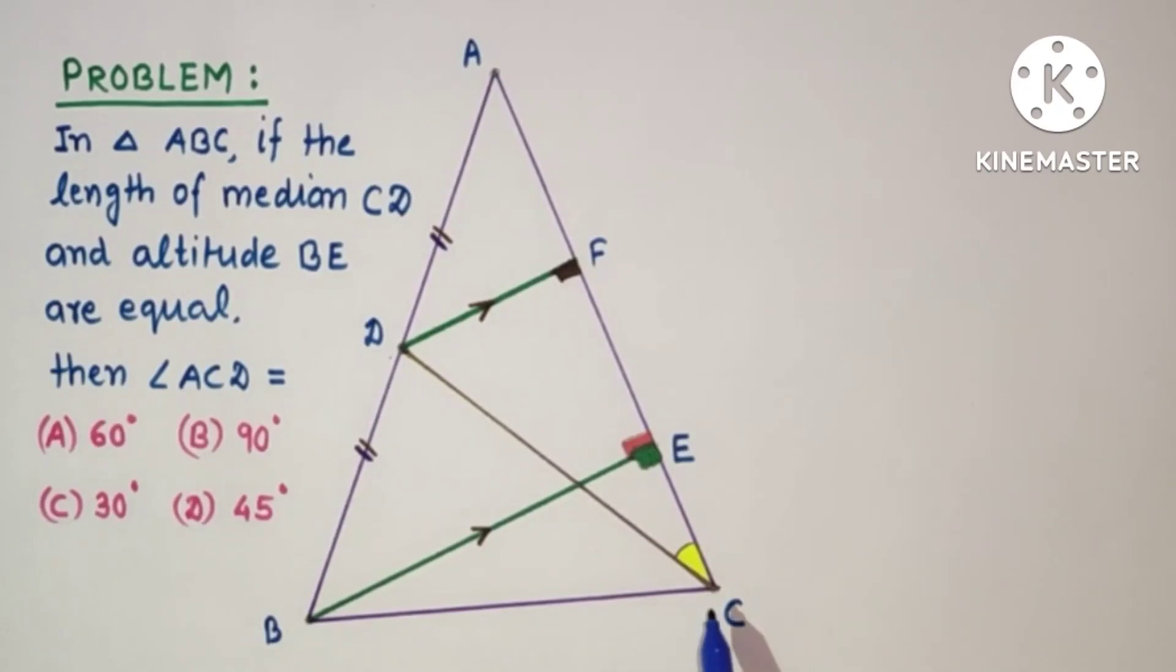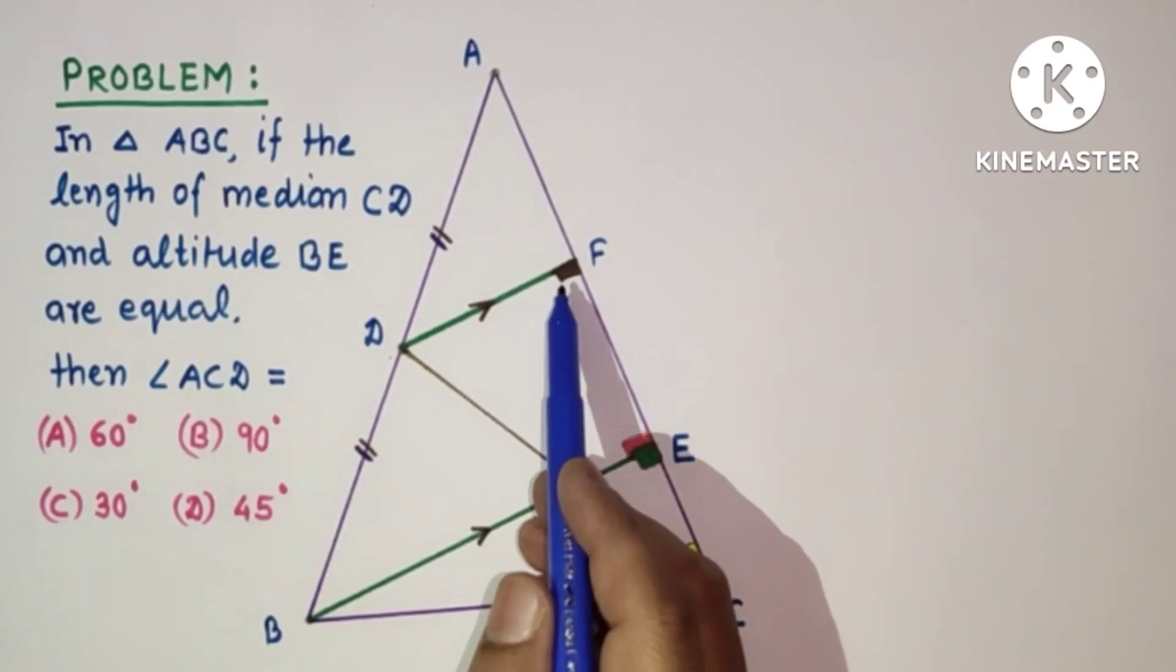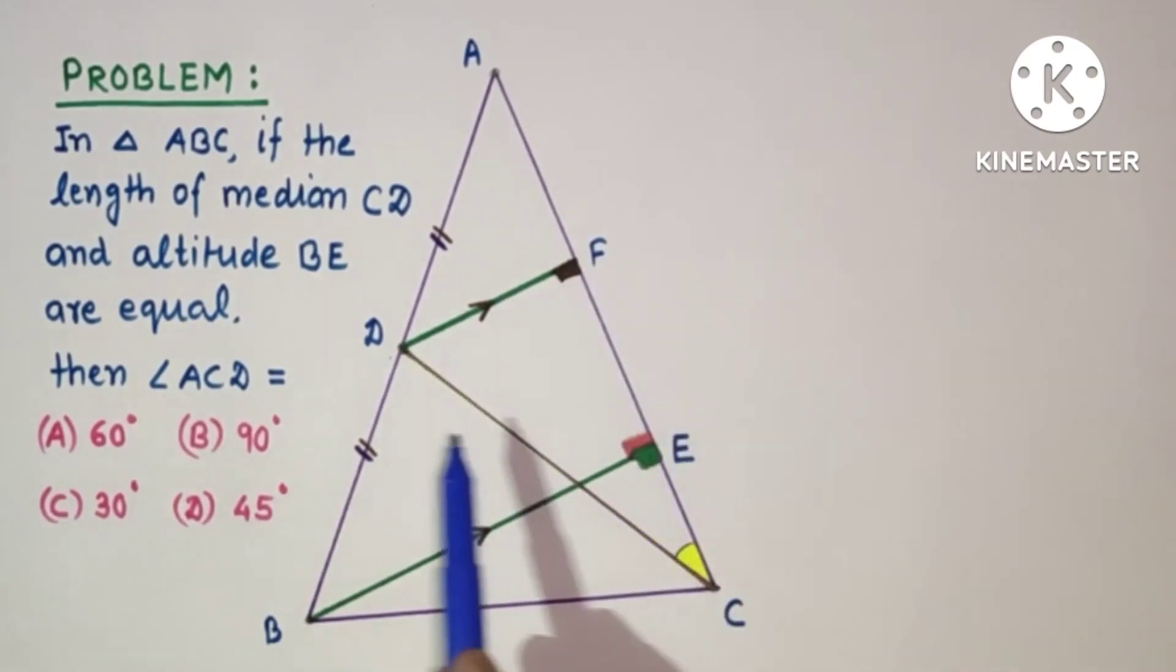And triangle CFD is a right angle triangle, right angle at F, and DF is half of CD. CD is hypotenuse.